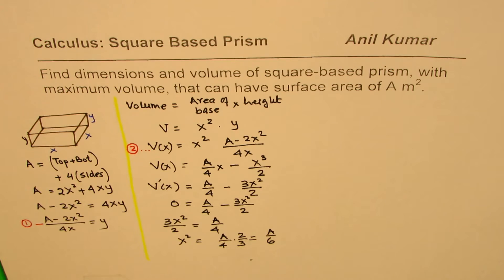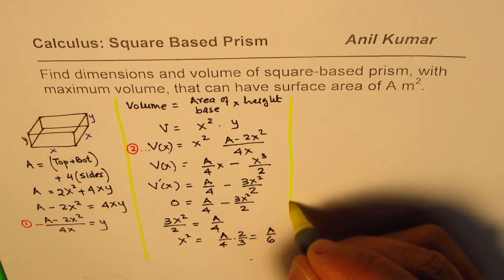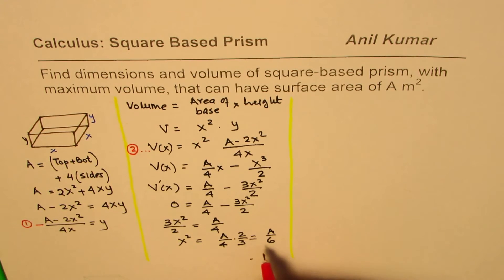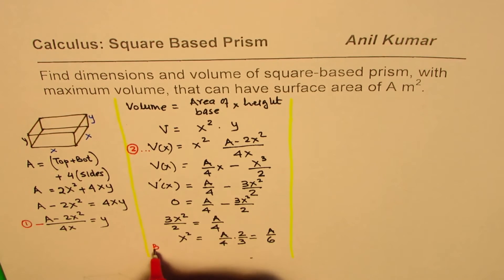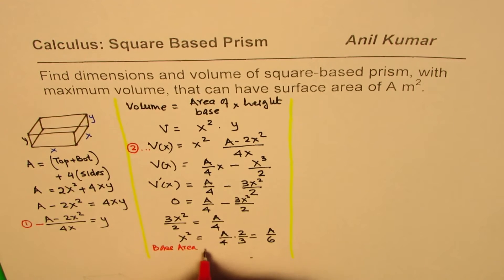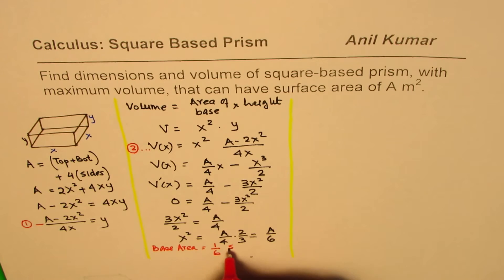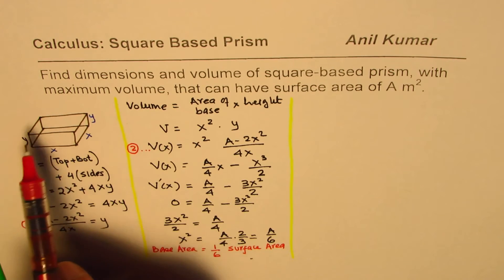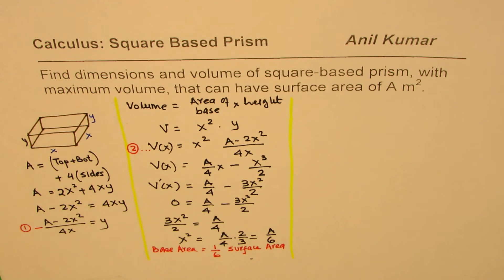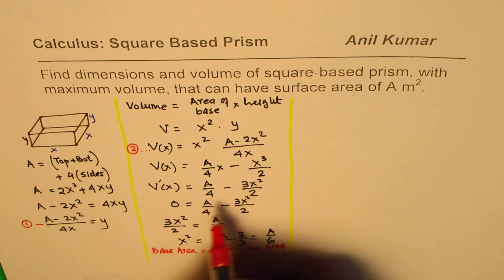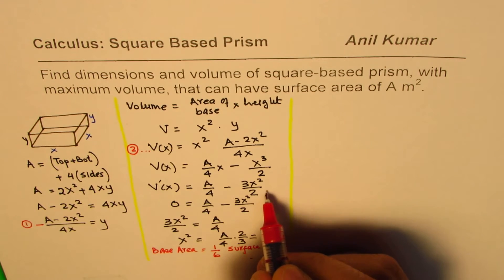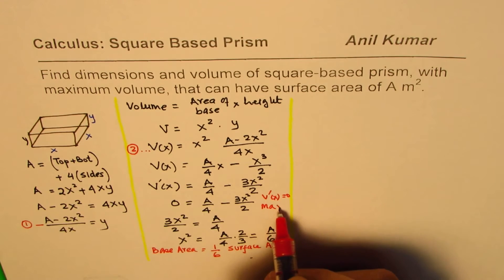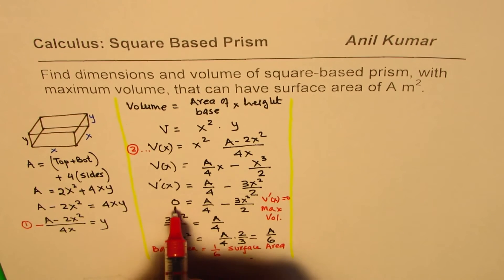This is a very important equation. The area of the base is one sixth of the total surface area. Since there are six surfaces, all six must have the same area — meaning we are heading toward a cube. All sides are the same, so the shape that maximizes volume for a given surface area is a cube. We set V' = 0 for maximum volume, which is why we equated to zero.